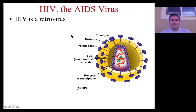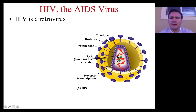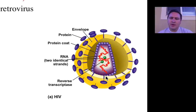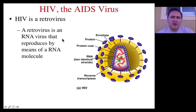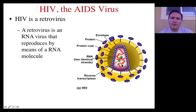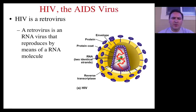So the HIV virus, which then leads to AIDS, is what's called a retrovirus. It's a single-stranded RNA virus, and it's constructed with an envelope that has these proteins around it. It has the RNA, and on the inside it has reverse transcriptase as well. A retrovirus is called this because it's an RNA virus that then reproduces itself by using mRNA molecules, retrotranscribing them back into DNA, and then inserting that DNA into the genome of the host.